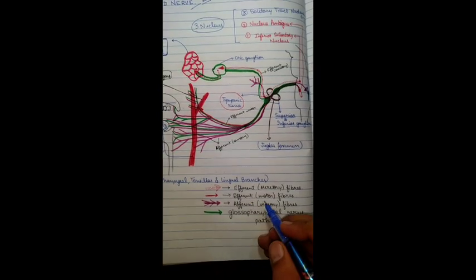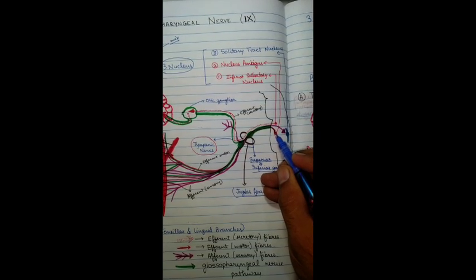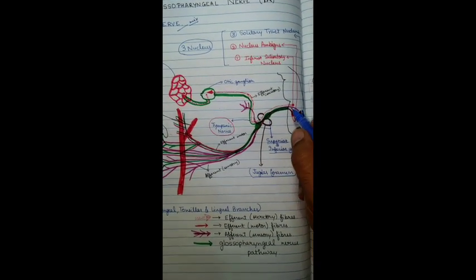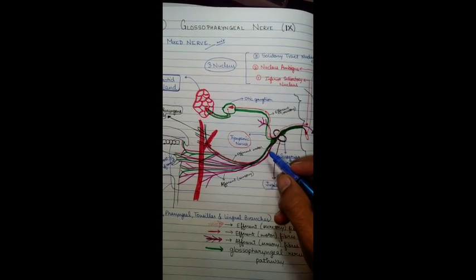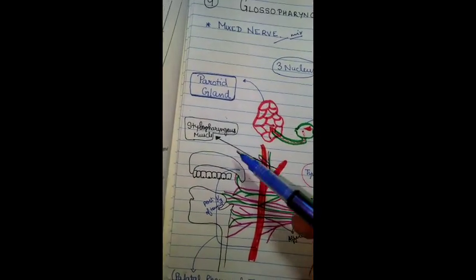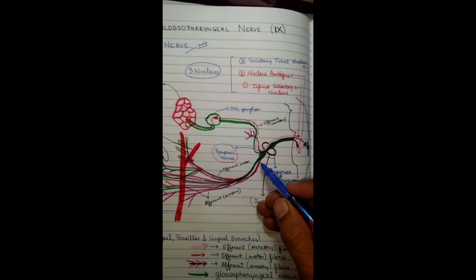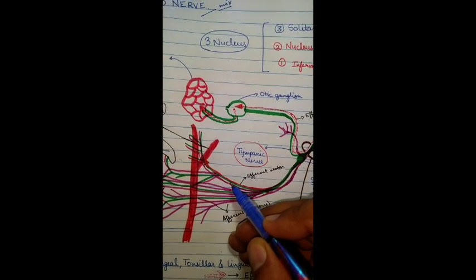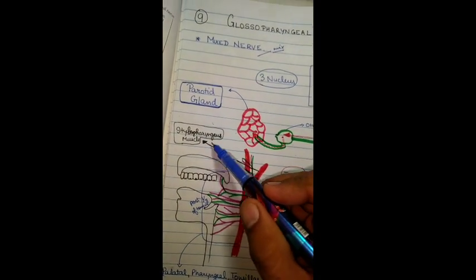Second, we will look at the efferent motor fibers. The efferent motor fibers arise from the nucleus ambiguus, which is the second nucleus. These efferent motor fibers will start from the nucleus ambiguus and run along the glossopharyngeal nerve to innervate a muscle known as the stylopharyngeus muscle of the pharynx. As you can see the red portion, these are the efferent motor fibers innervating the stylopharyngeus muscle.